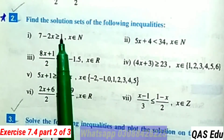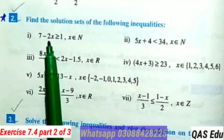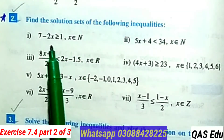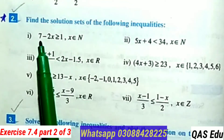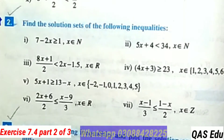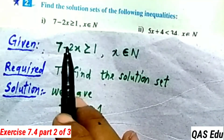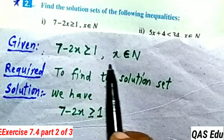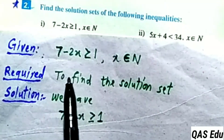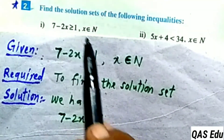Part 1: 7 minus 2x is greater than or equal to 1, where x belongs to the natural numbers. The linear inequality is given and x belongs to natural numbers, and the inequality is greater than or equal to 2. We will find the solution sets.